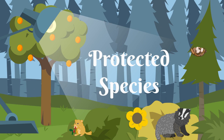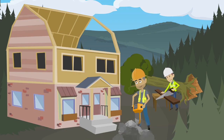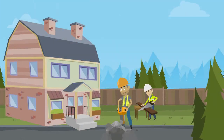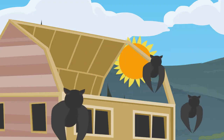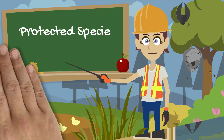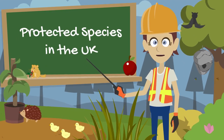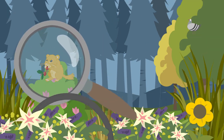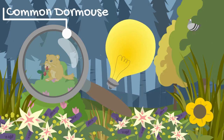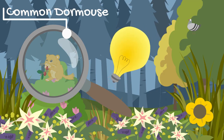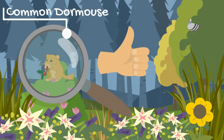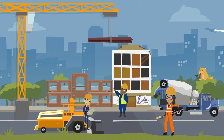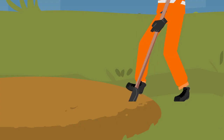In construction, we come across a wide range of biodiversity on both green and brownfield sites, particularly if a site has been left undisturbed or derelict for some time. We're going to go through some of the more common species which are legally protected in the UK, to help you identify them and know what to do if you find them. Failure to deal with them in the right way could lead to legal prosecution.